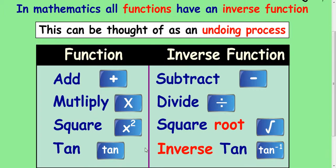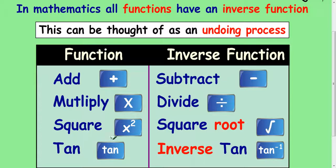These undoing processes get you back to the starting value. So if you add on 6, then subtract 6, you get back to where you started. If you multiply by 2 and divide by 2, you get back to where you started. If you square a number, like 5, and get 25, and then square root it, that will get you back to 5. And it's the same process with tan: if you take the tan of a value, you get a decimal, and if you inverse that, you get back to the angle.